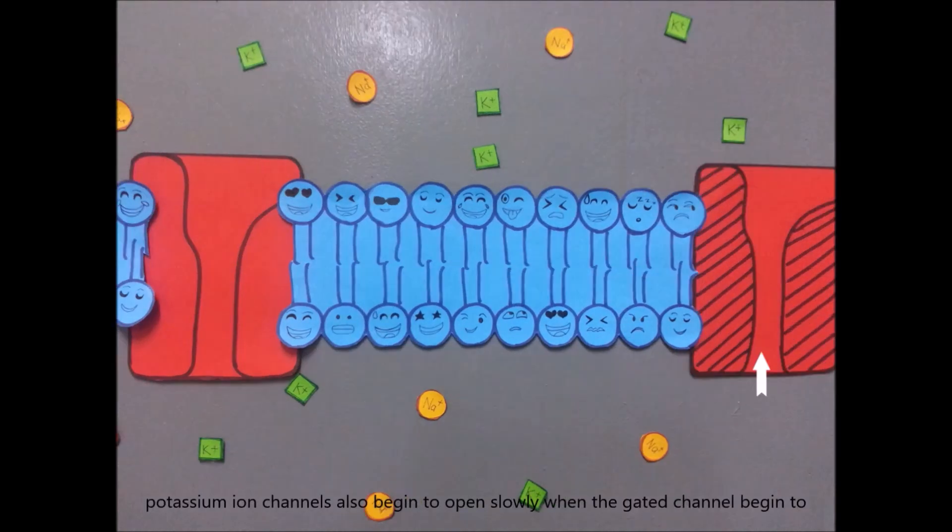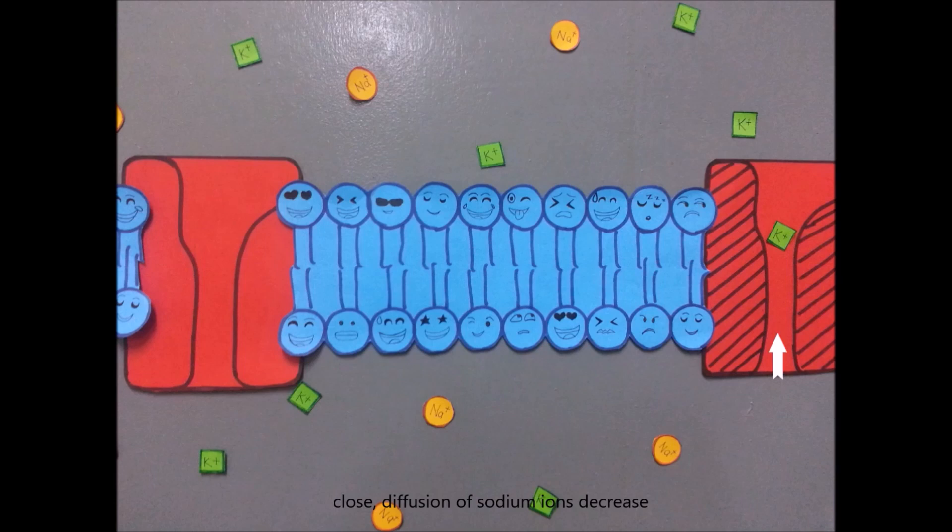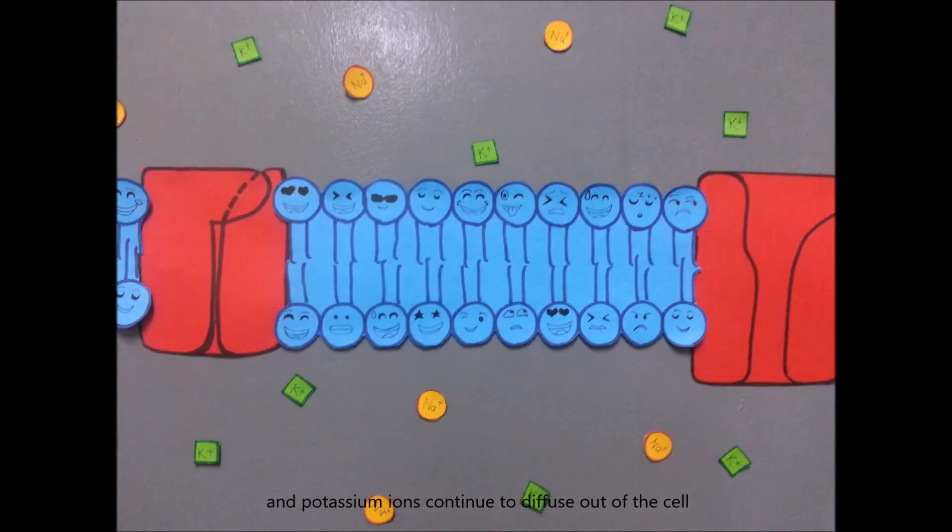Potassium ion channel also begins to open slowly. When the gates of the channel begin to close, diffusion of sodium ions decreased and the potassium ions continue to diffuse out of the cell.